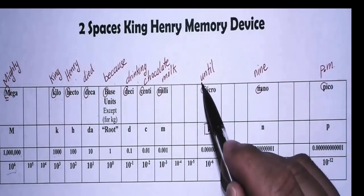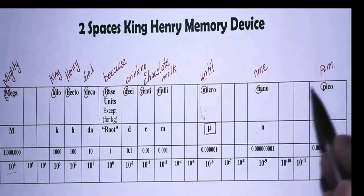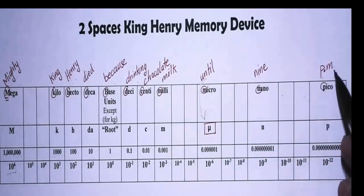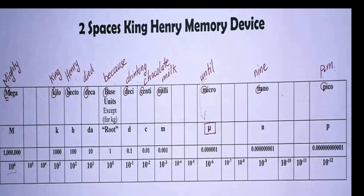Notice until starts with the letter U because it represents the symbols for micro. Two spaces, nine, two spaces, P.M. So the first letter of the words in the statement represents the symbols of the prefixes.